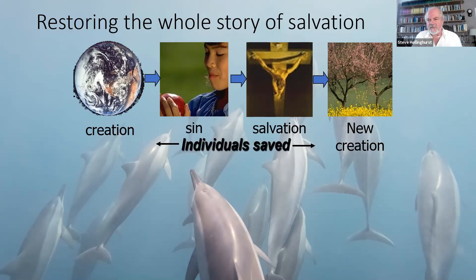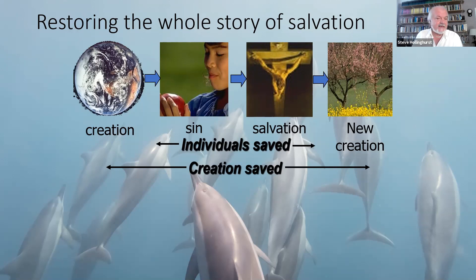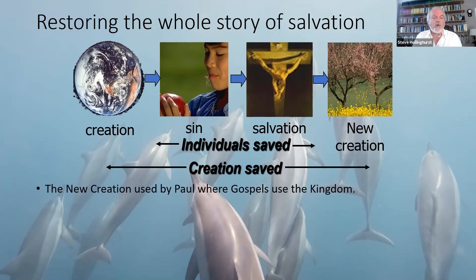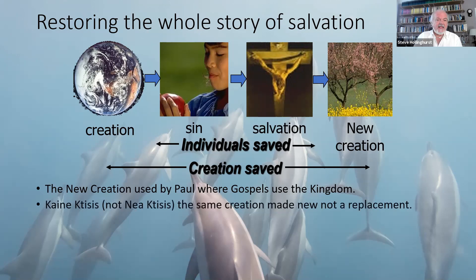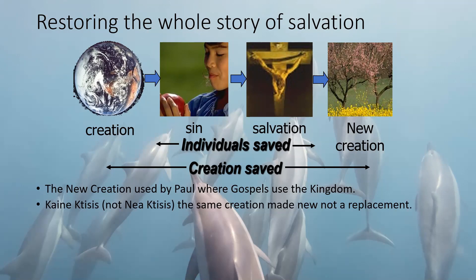In western Protestantism, when we think of salvation and the gospel, we often focus on individuals — the power of sin, death, and evil in our lives overcome by Christ. But the whole picture shows the story of salvation running from creation to new creation, bookending all of scripture. We're not just talking about individuals but communities, societies, nations, and ultimately the whole of creation included in the saving and reconciling work of God. Paul particularly raises this theme, often speaking of the 'new creation' where the gospels use 'kingdom.' Importantly, this is a kainos not a neos new creation — the same creation made new, not a replacement.